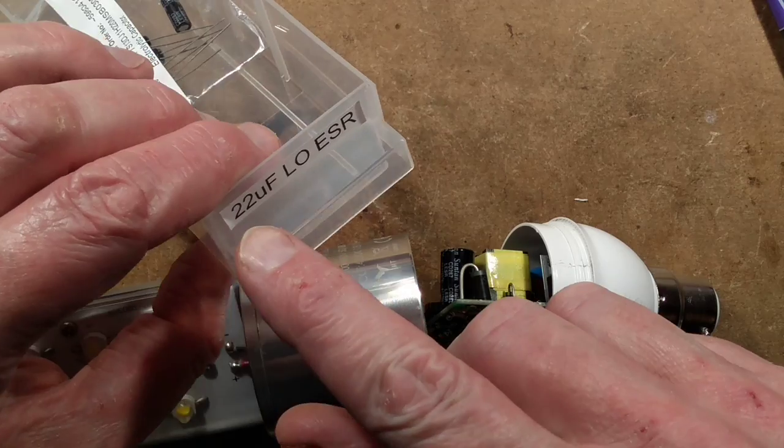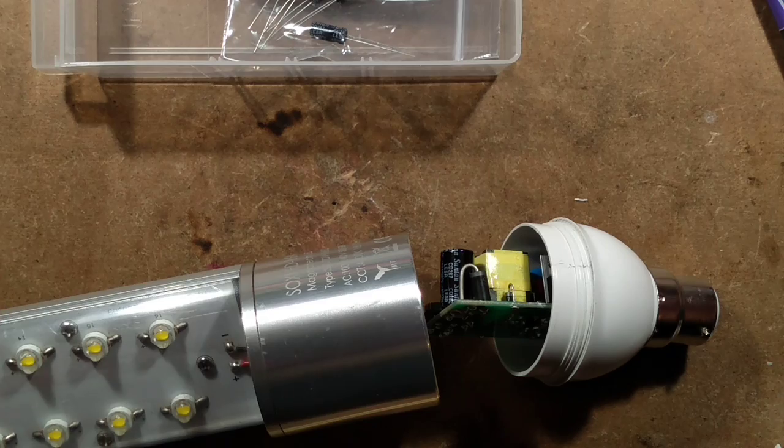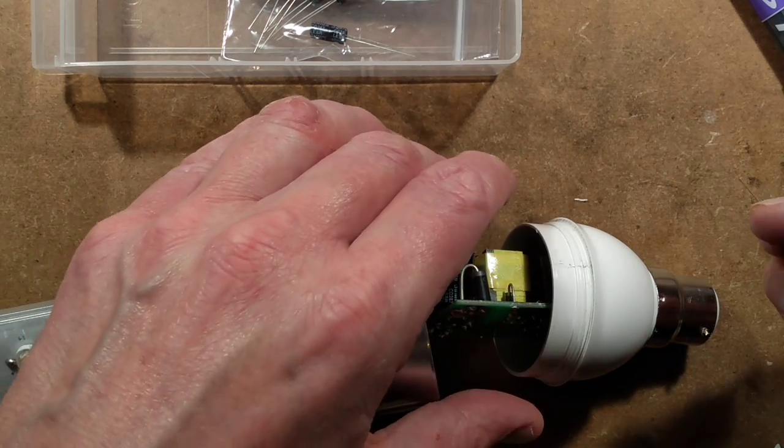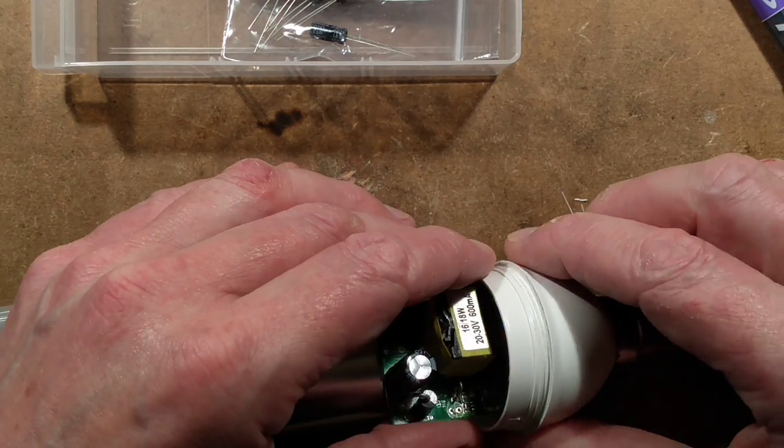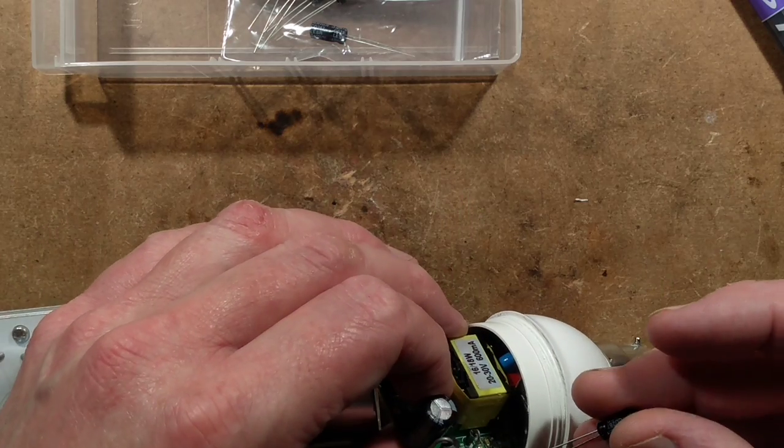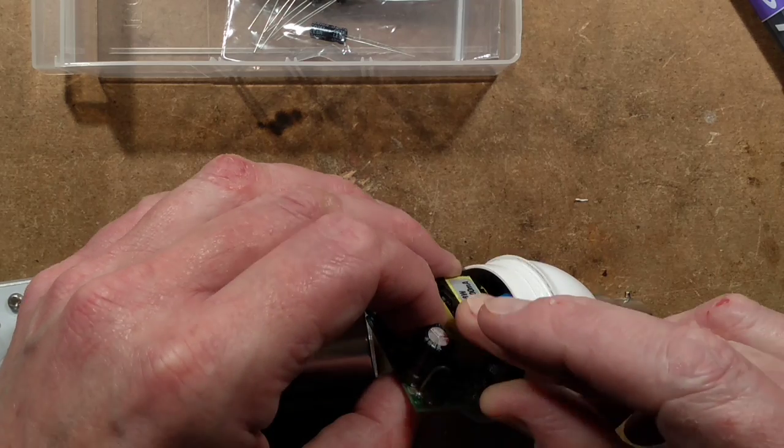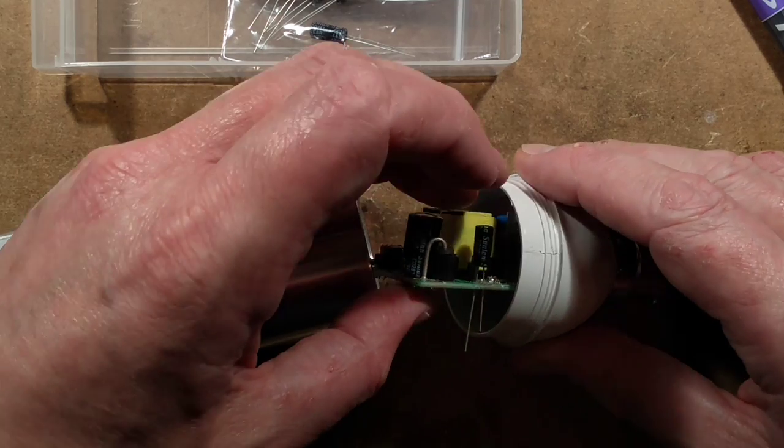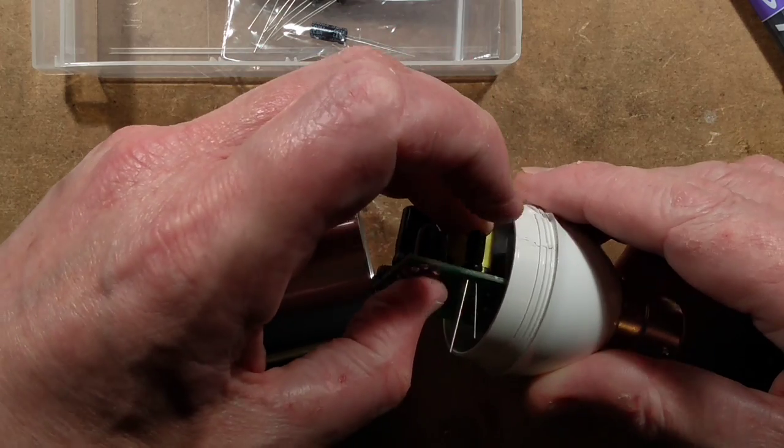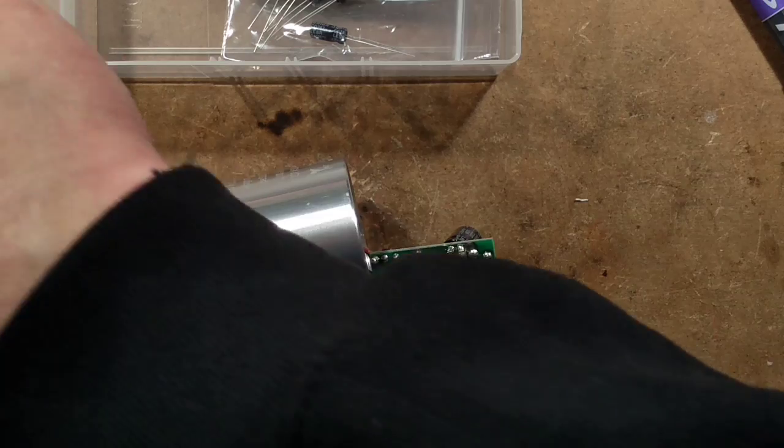I've whipped that capacitor out. It's 22 microfarad low ESR. I've got my generic low ESR capacitors made by Suntan, and I'm going to pop this new one in. So the positive is going down there, and the negative is going over there. In the past, I've noticed a trend of the diodes failing, but we'll find out.